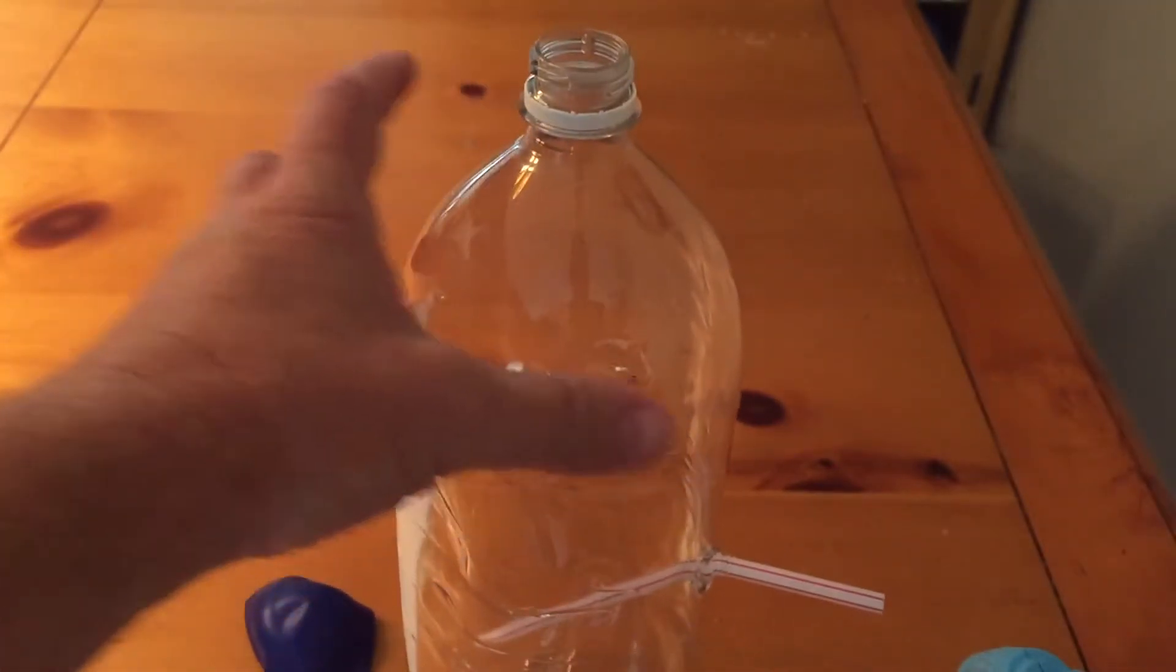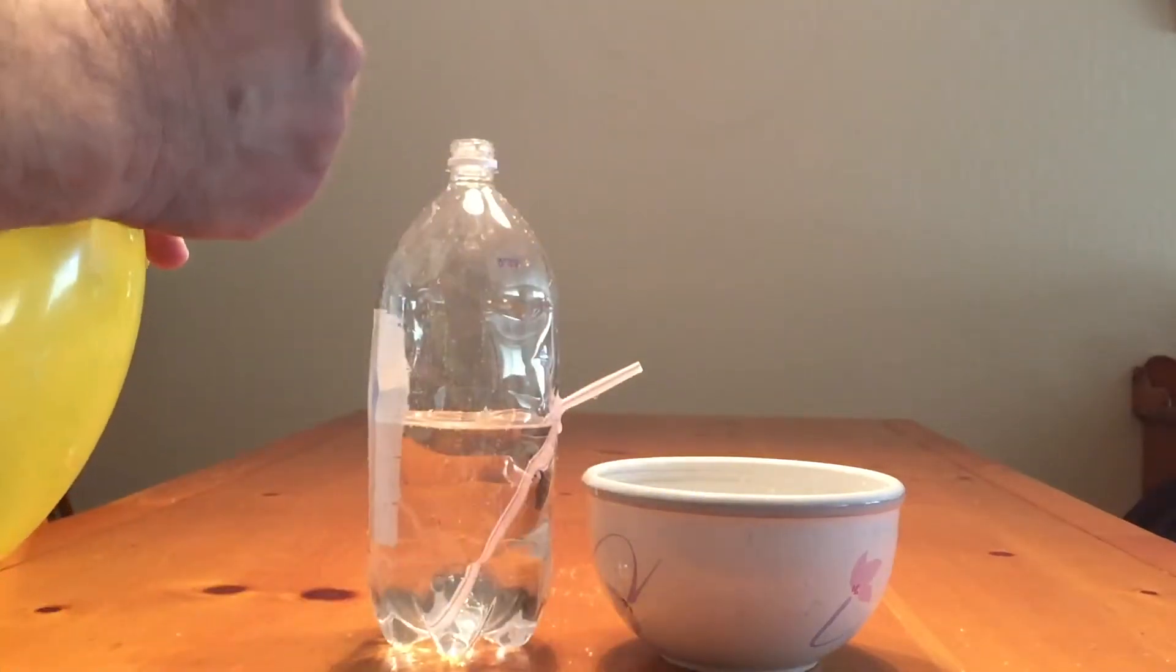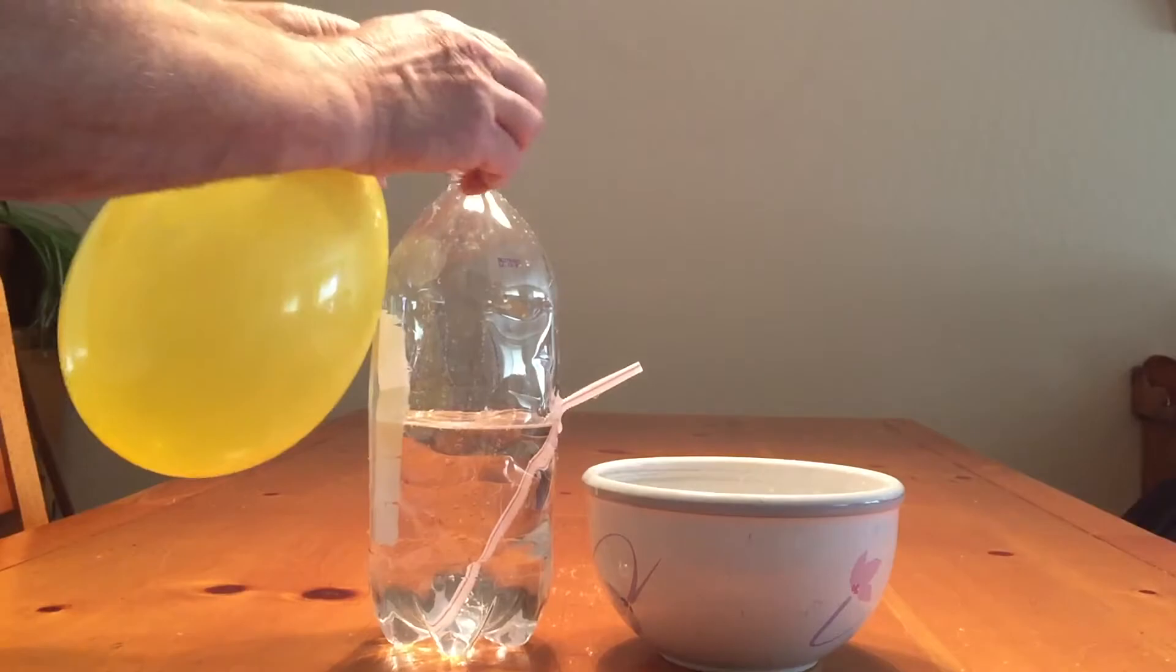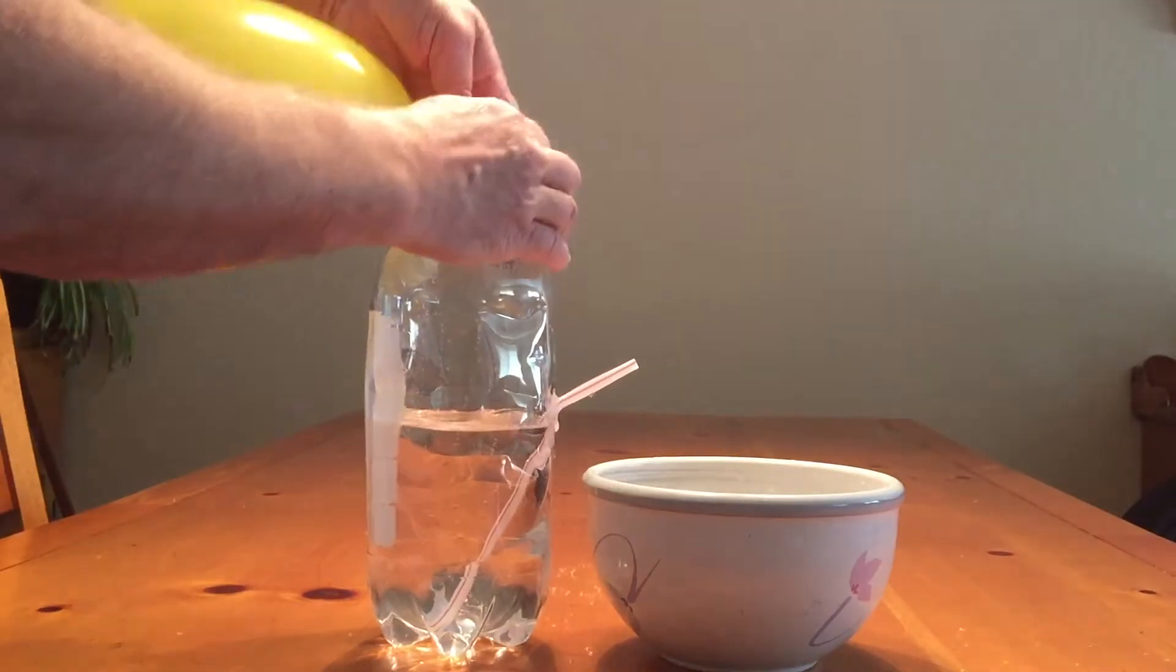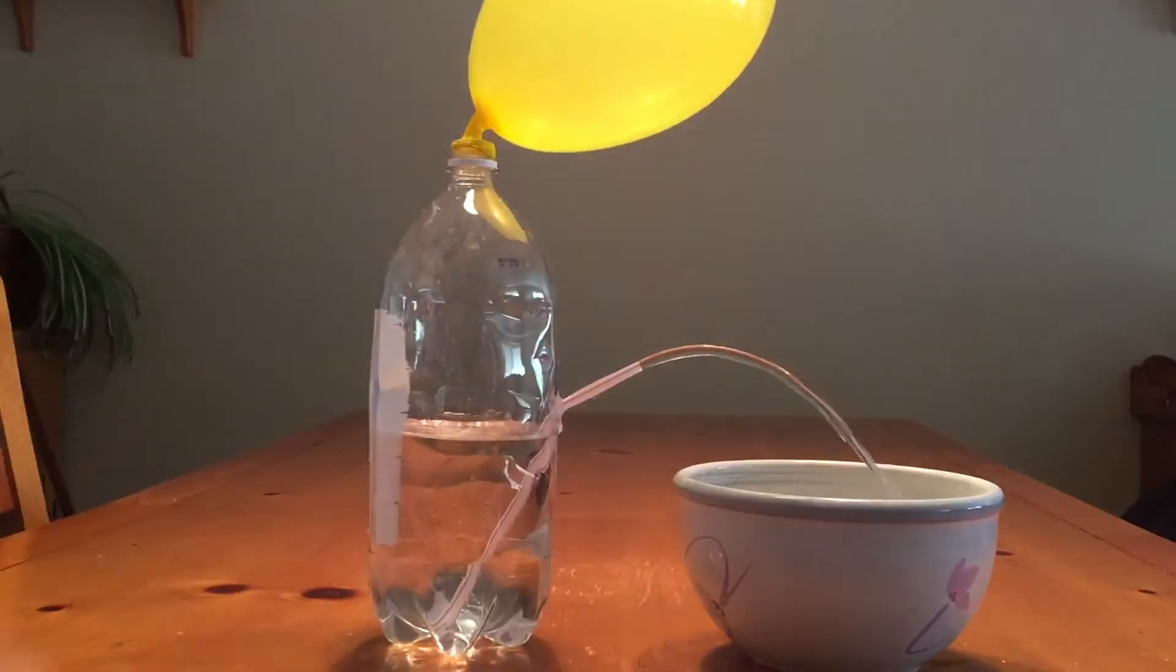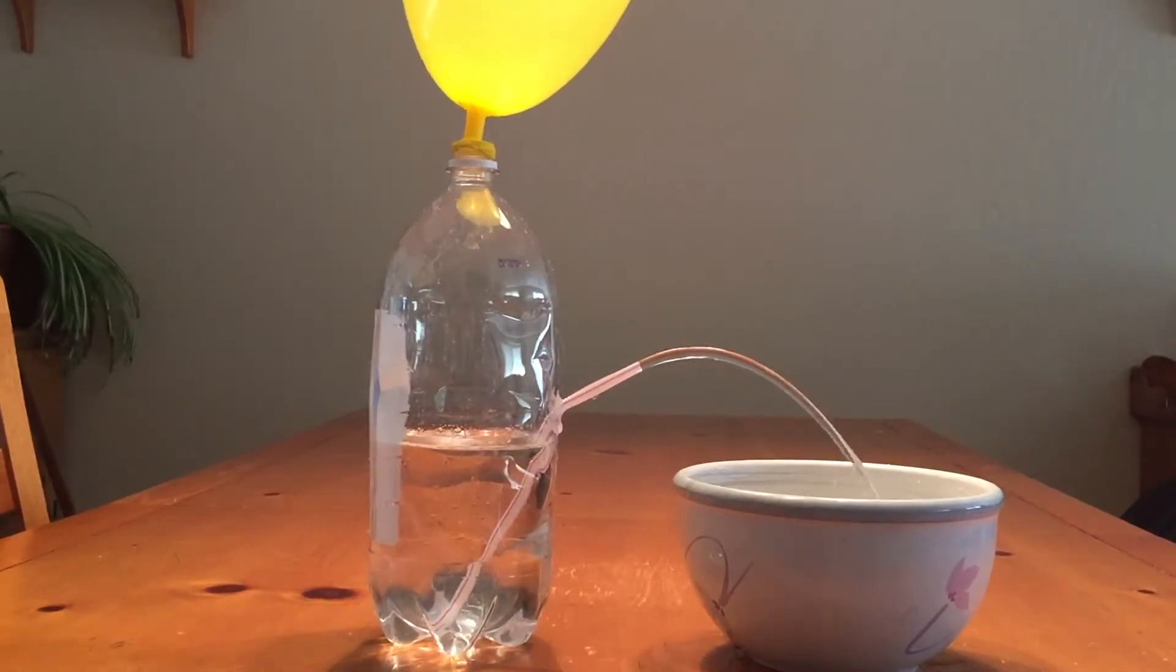Now you're going to fill the bottle about halfway. If you go too far, the water will start coming out the straw, just underneath the point of entry where the straw has the hole. Blow up your balloon and put it on top and you've got yourself a balloon water pump just like that.